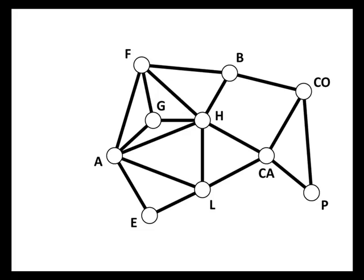Now we're ready to color this graph. We're told to use alphabetical order, so since we've got a large number of vertices, it's helpful to make a list of the vertices in alphabetical order — all the way from A at the top down to P at the bottom. A will be the first vertex we color, and using our greedy coloring algorithm we want the lowest numbered color, so we color vertex A with color number one. Vertex B is not connected to anything colored so far, so B can also be color number one. CA is not connected to anything colored yet, so CA can be color number one as well.